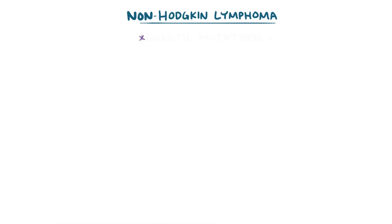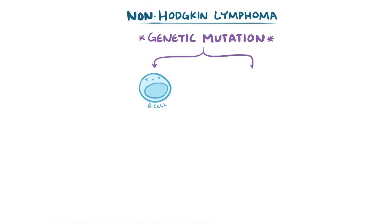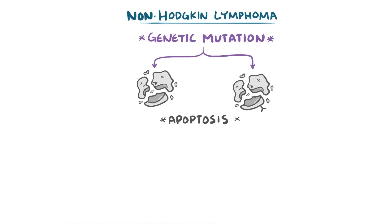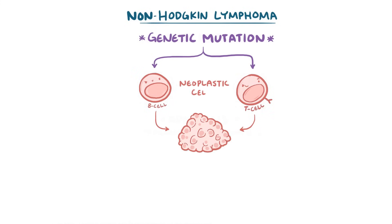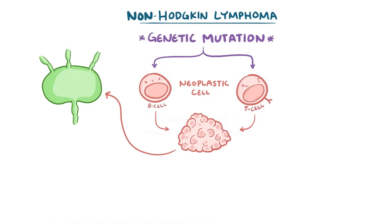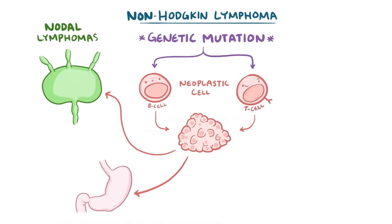In non-Hodgkin lymphoma, there's usually a genetic mutation in a lymphocyte, either a B cell or a T cell. Cells are supposed to undergo apoptosis, or programmed cell death, but instead the lymphocyte starts to divide uncontrollably, becoming a neoplastic cell. Usually lymphomas develop in lymph nodes and are called nodal lymphomas. When they develop in other tissues and organs, like the stomach or skin, they're called extranodal lymphomas.